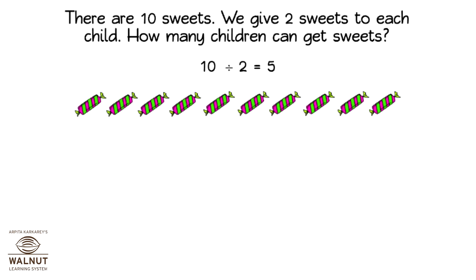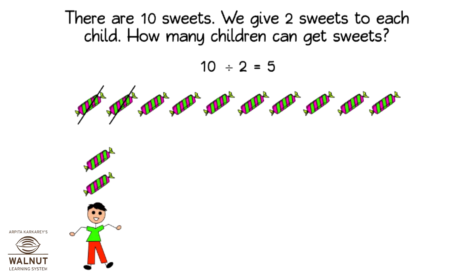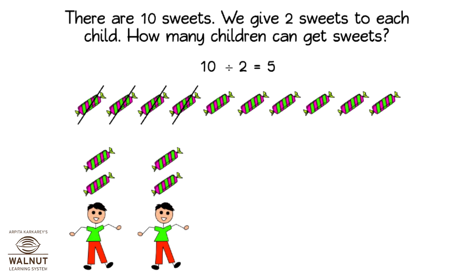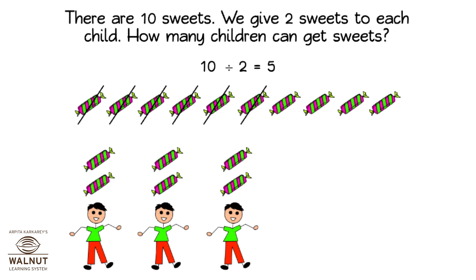We take away two sweets and give them to one child. There are eight sweets left. Then we take away two more sweets and give them to another child. So it's two children who have sweets. There are six sweets left. Then we take away two more sweets and give them to another child. So it's three children who have sweets.